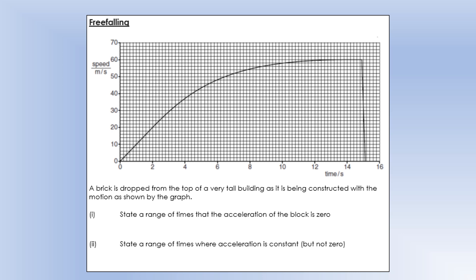So state a range of times that the acceleration of the block is zero. So this is right at the end of the increasing where the graph becomes horizontal. So I'd say the gradient is zero between about 13.8 and 14.9 seconds. It's where it's horizontal right at the end of the speed increase.